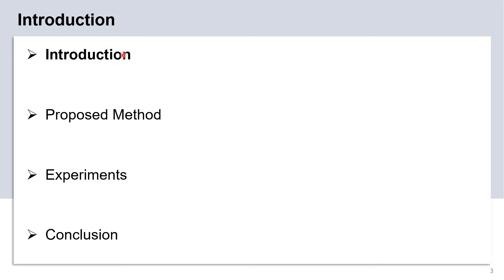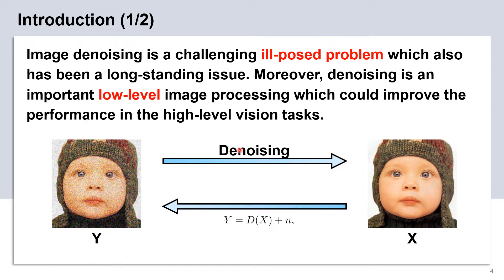So we start with the section of introduction. Image denoising belongs to an ill-posed problem and has been a long-standing issue. We can also see image denoising as a mapping problem, like mapping the input noisy images in Y-domain to noise-free images in X-domain. On the contrary, we manually generate synthesized noise such as AWGN by the following formula, where D means the degradation function and N represents the additive noise. So far, image denoising still plays an important role as a preprocessing step for high-level vision tasks to improve results.